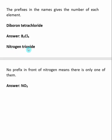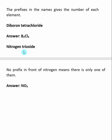For nitrogen trioxide, the elements involved are nitrogen (N) and oxygen (O, from the ox- syllable of oxide). There is no prefix in front of nitrogen, which means there is only one nitrogen. Tri- means three oxygens. So the molecular formula is NO3.